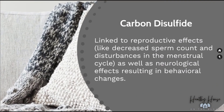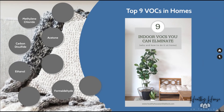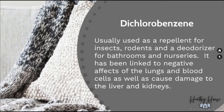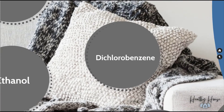Carbon disulfide has been linked to reproductive effects, including decreased sperm count and disturbances in the menstrual cycle. It has also been linked to neurological effects resulting in behavioral changes. All health concerns mentioned are linked to research papers in this week's blog post. Dichlorobenzene is usually used as a repellent for insects and rodents, and as a deodorizer for bathrooms and diaper pails. It has been linked to negative effects in the lungs, problems with blood cells — specifically red blood cell count — and damage to the liver and kidneys.